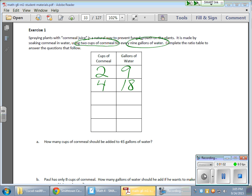So for every two cups of cornmeal, you need nine gallons of water. So if I was to add another two cups of cornmeal, I'm going to need another nine gallons of water.